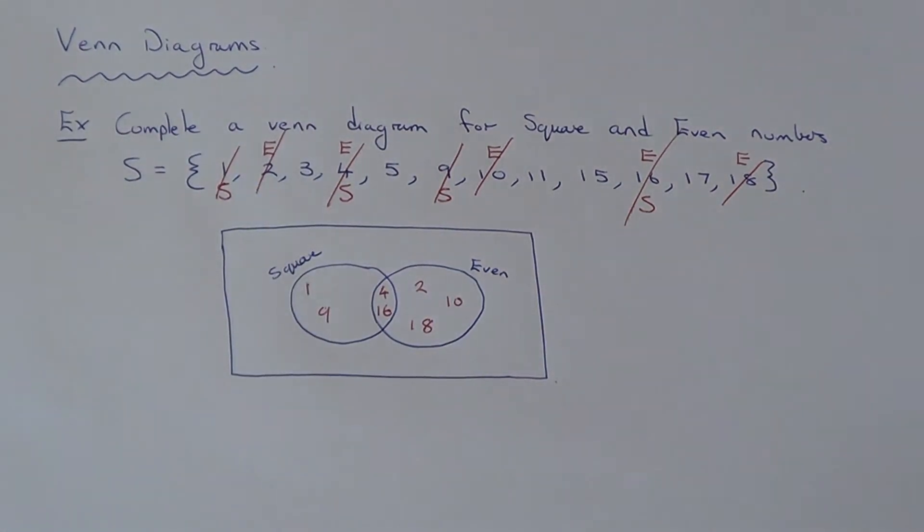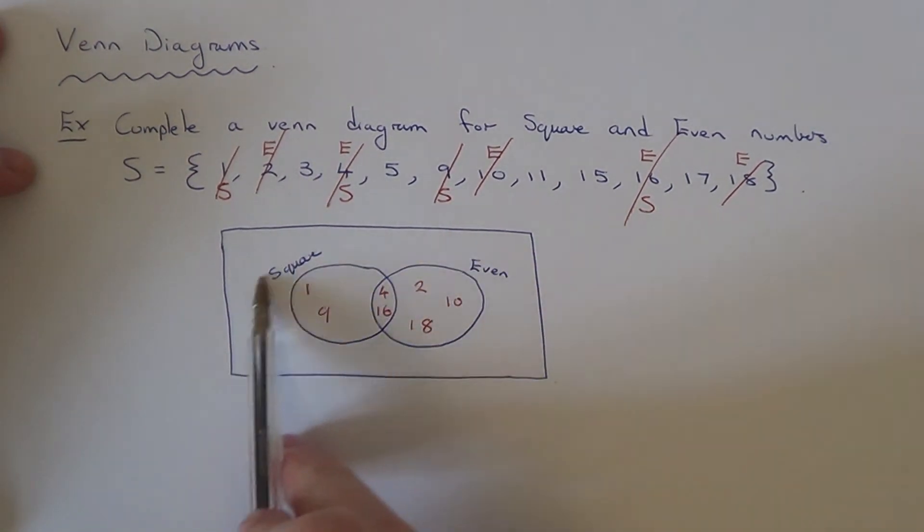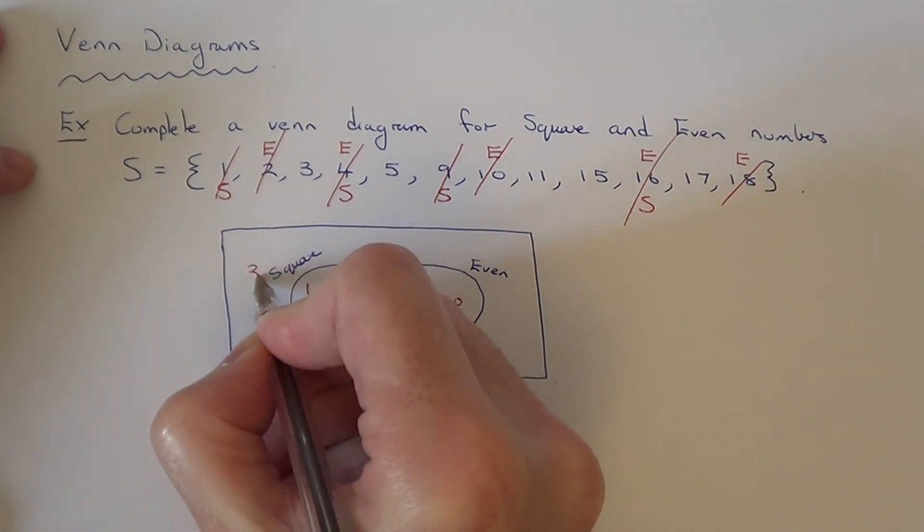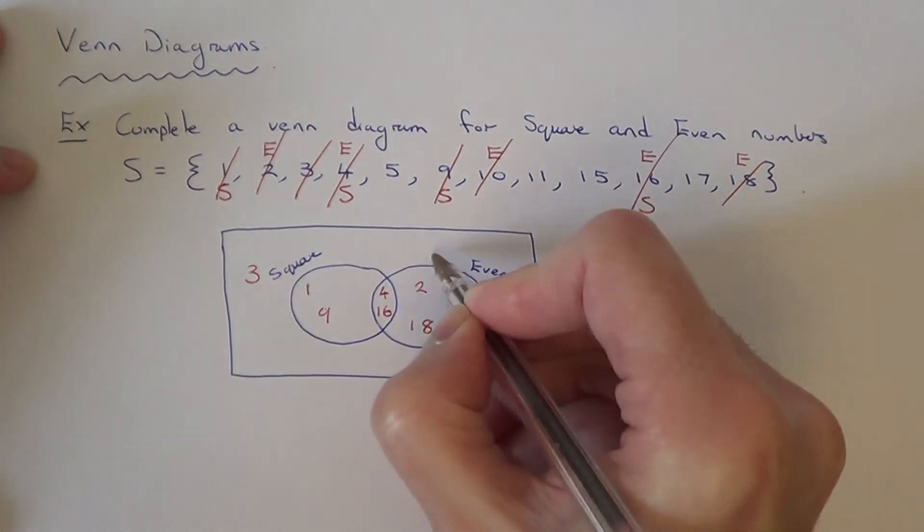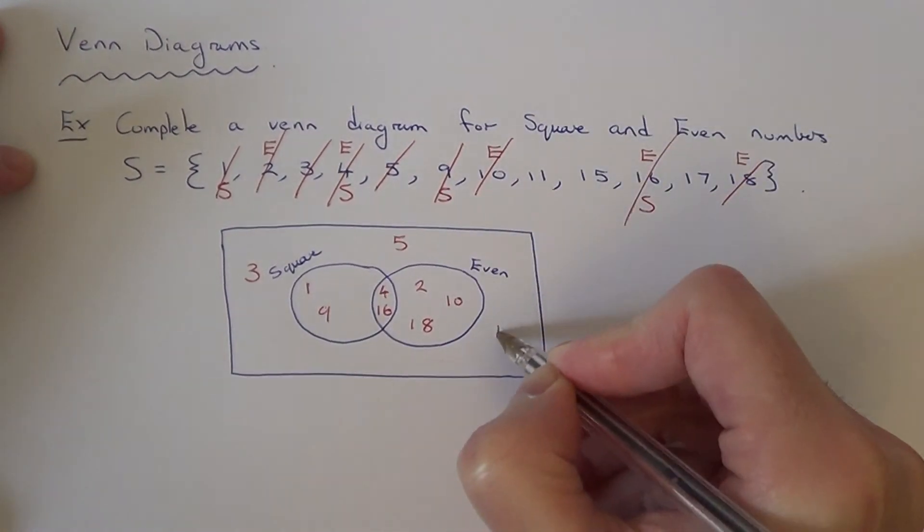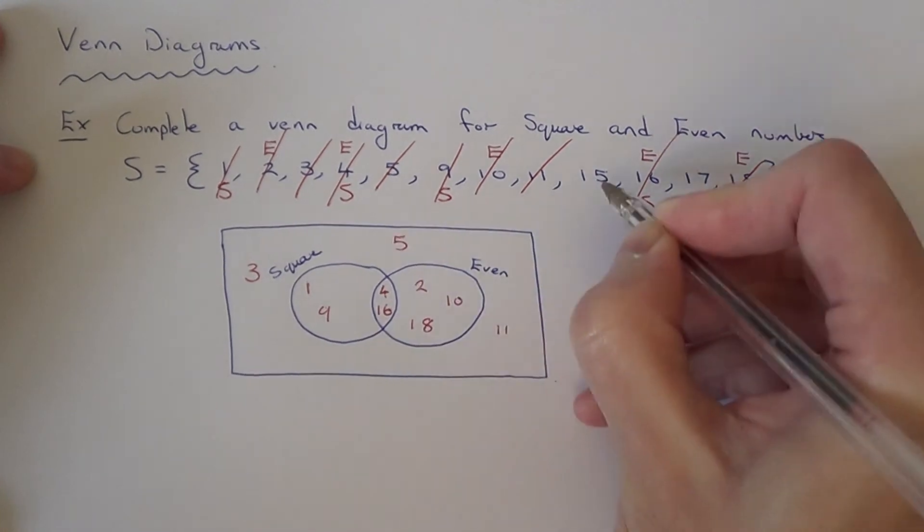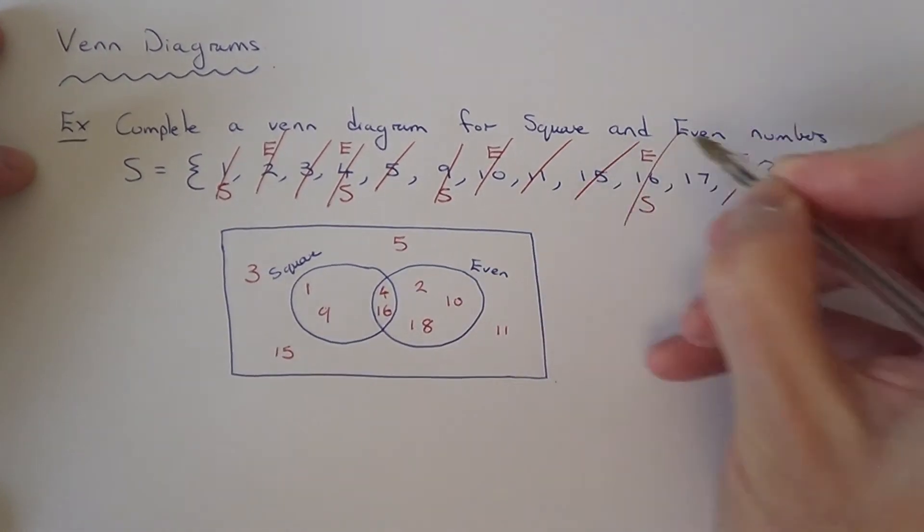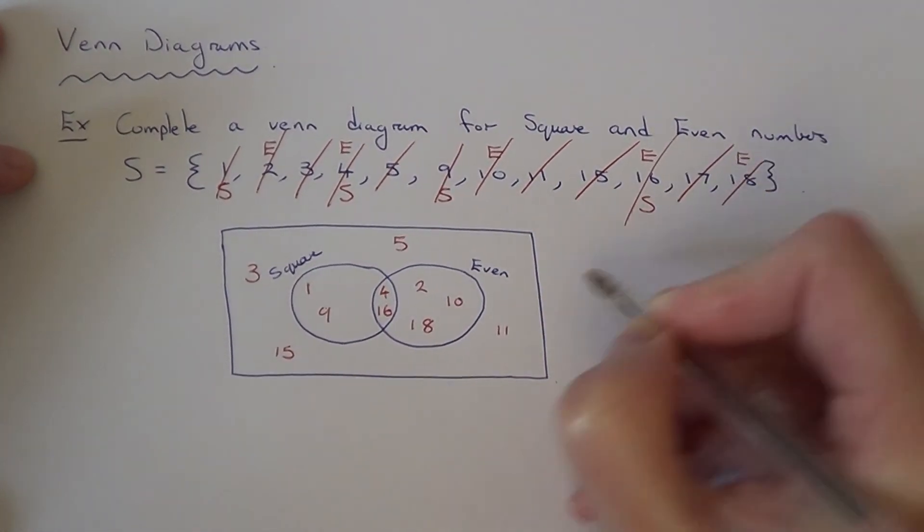So we're then just left with the numbers which aren't square numbers and they're not even numbers. So these numbers will go anywhere around the outside of the Venn diagram. So we've got 3, 5, 11, 15 and the last one is 17.